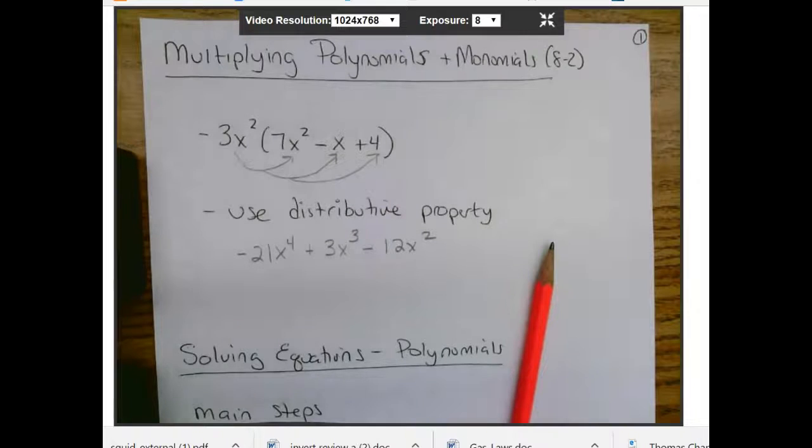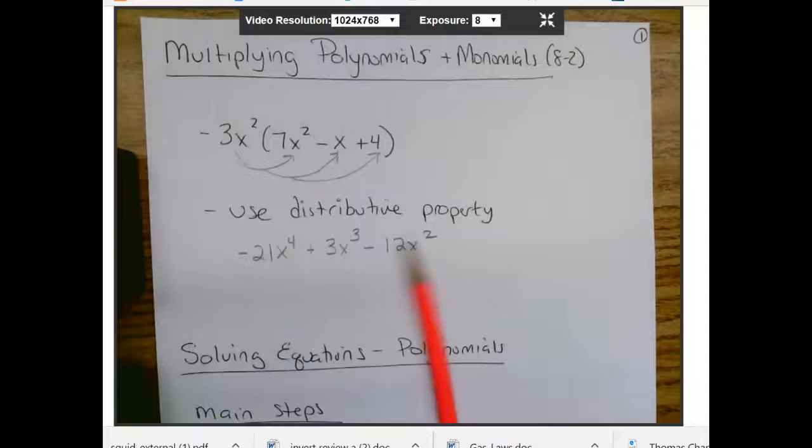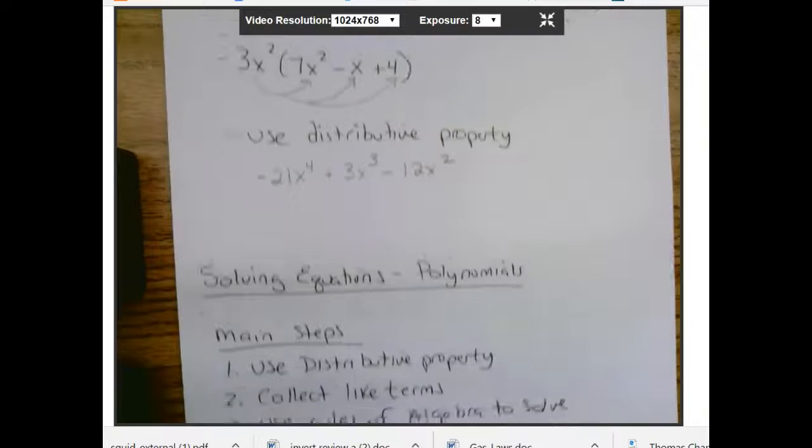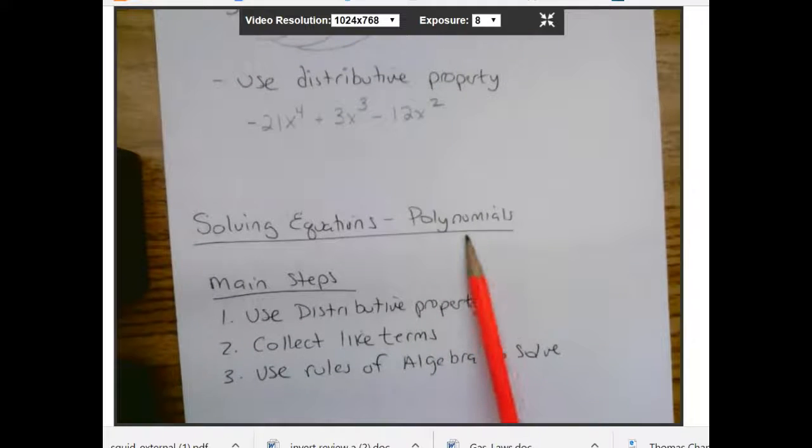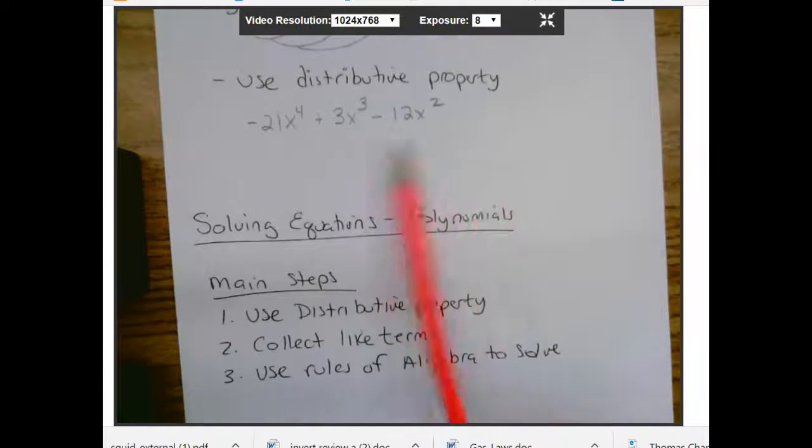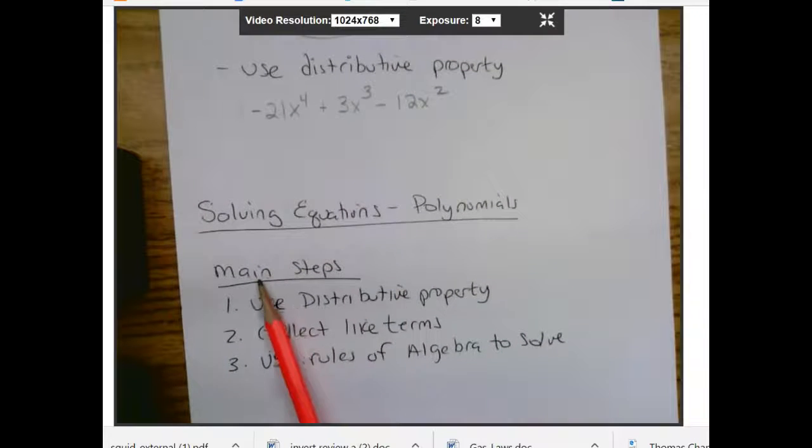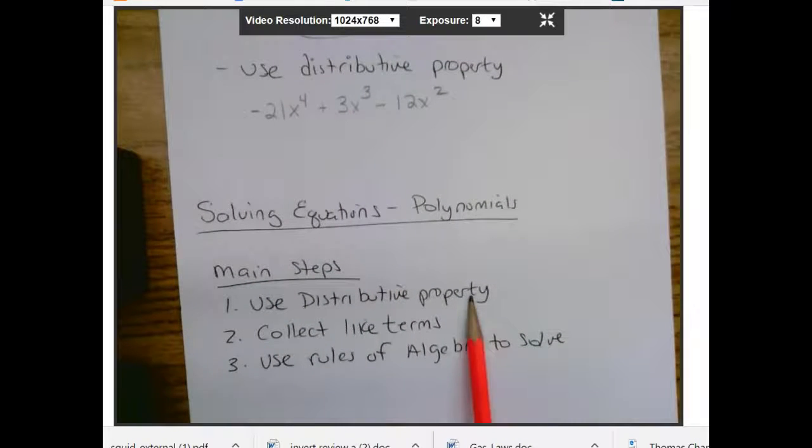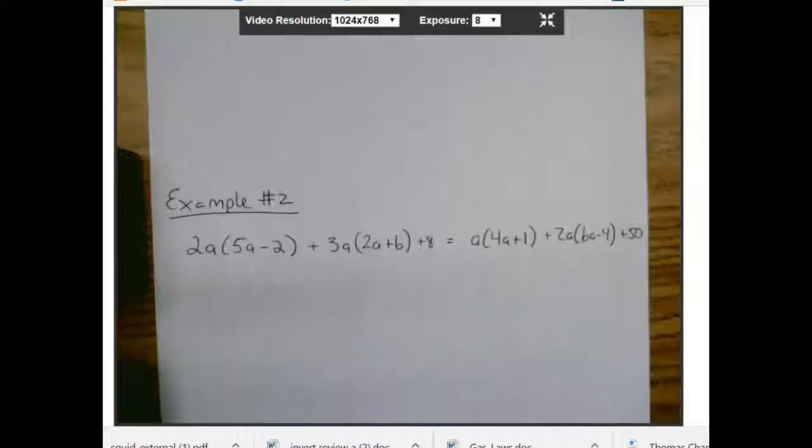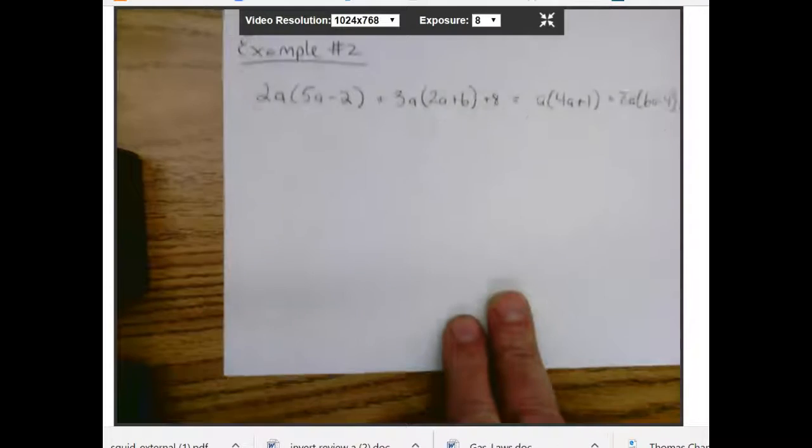So that's a pretty easy process. And then what we're going to do with these is sometimes we're going to solve these if we can. And I'm going to show you kind of an example, but first give you the steps. So if we're trying to solve a polynomial like one of these, we're going to do a simple one first, work our way up to the more difficult ones. But the main steps are we do this first step here. We use the distributive property. And we're going to collect all the like terms. And then we're going to use rules of algebra to solve. So let's look at an example of that here first.